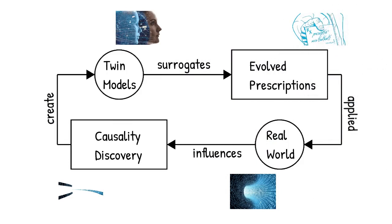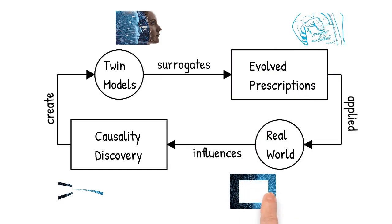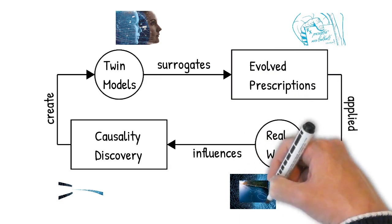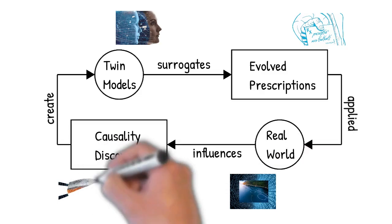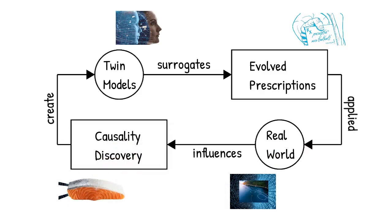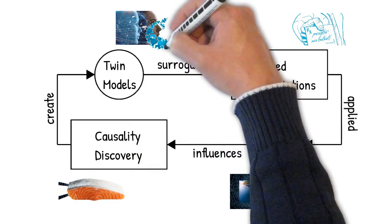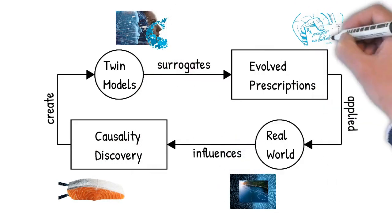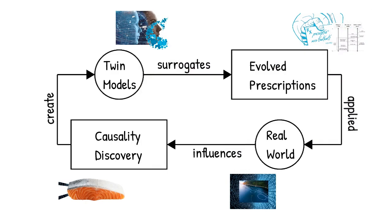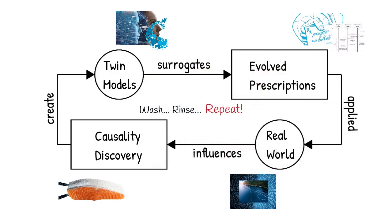Here's an example. Consider a salmon fishing operation that is interested in producing really super fat salmon, in the shortest amount of time with the least amount of resources. From the causal data, digital twin salmons are created from which prescriptive feeding programs are evolved and tested against them. This process repeats itself until the desired real world outcome is achieved.